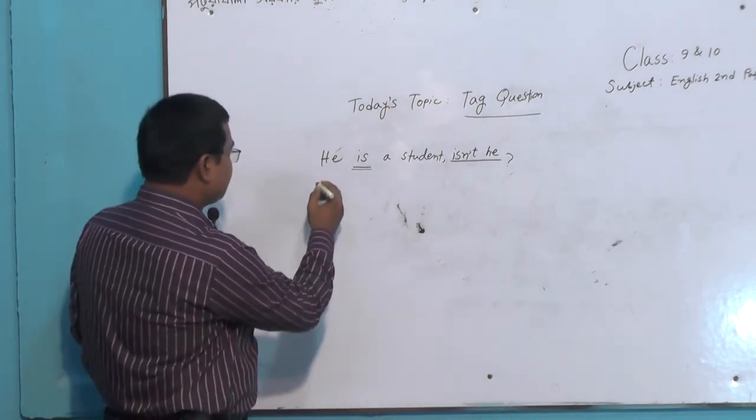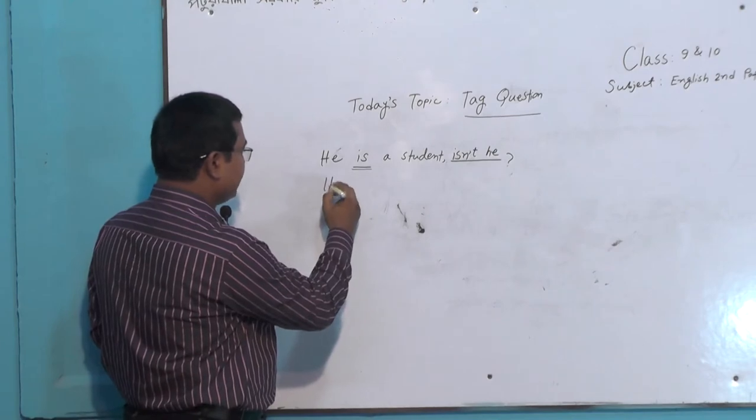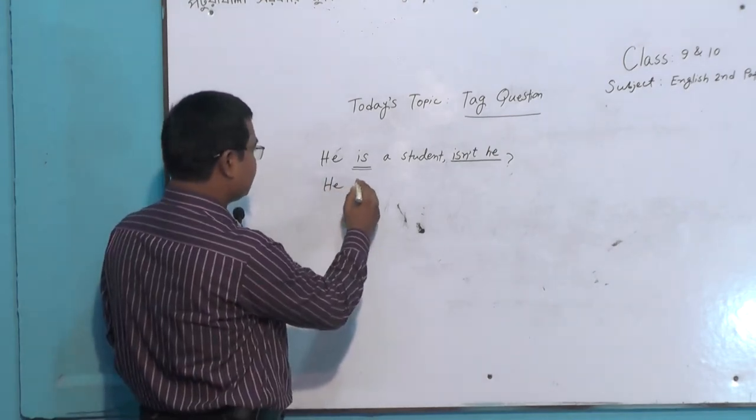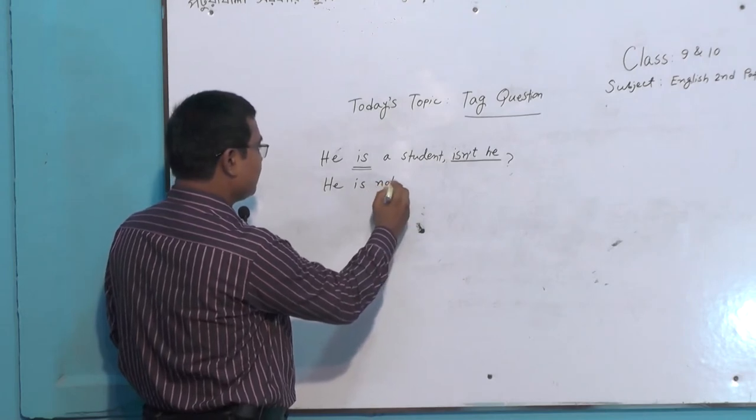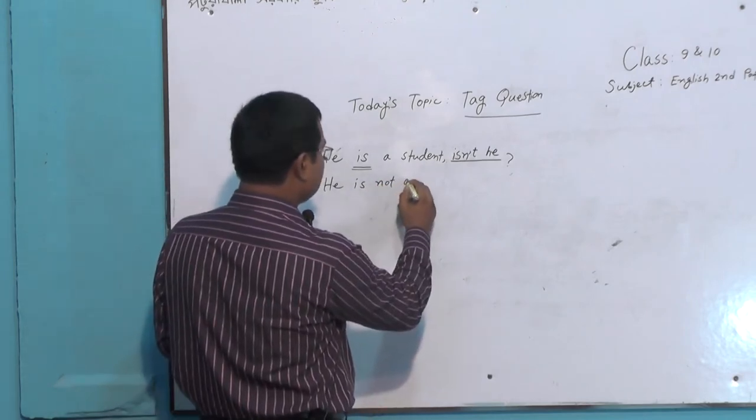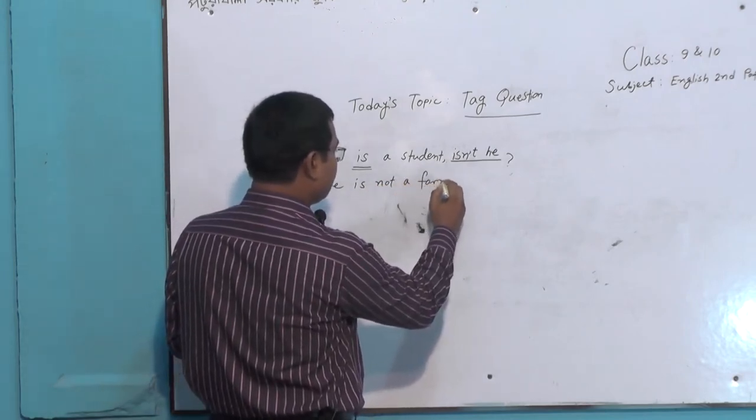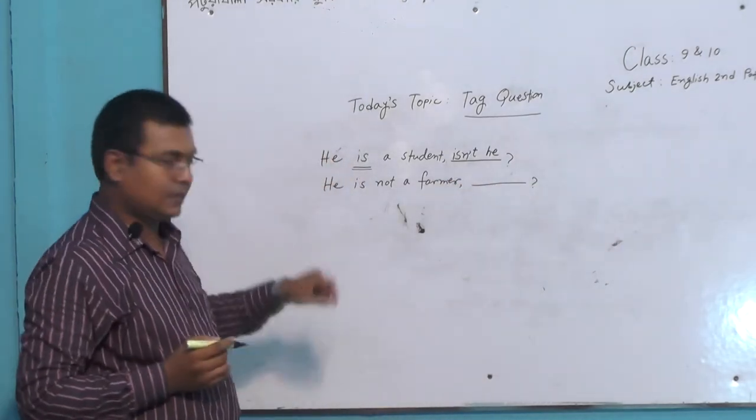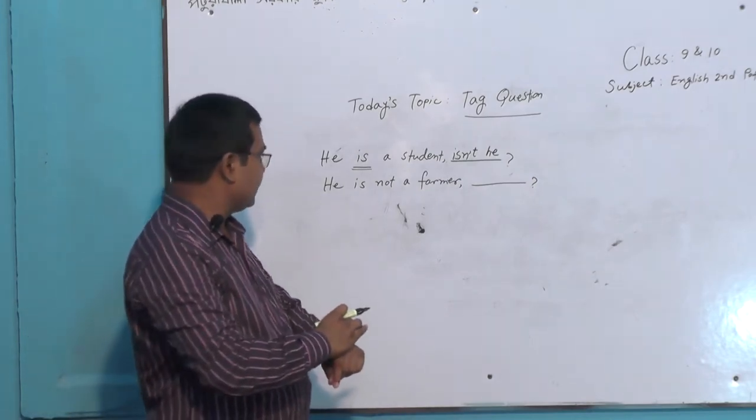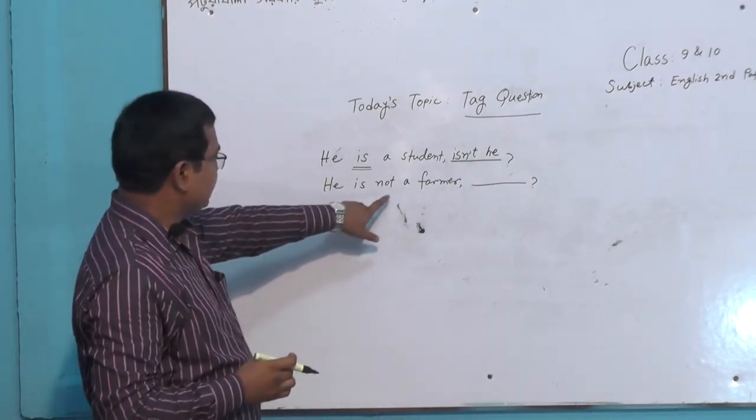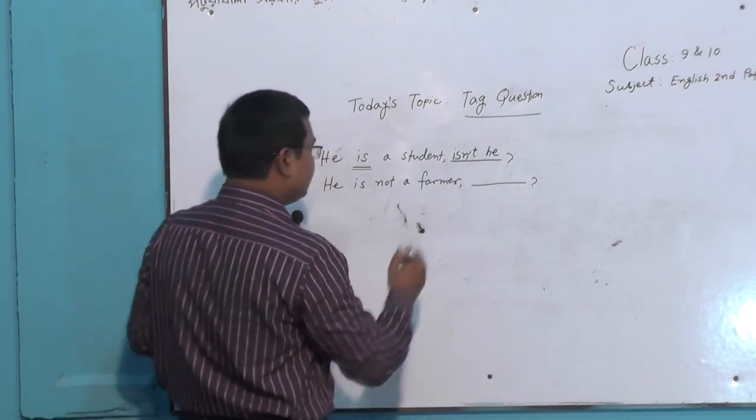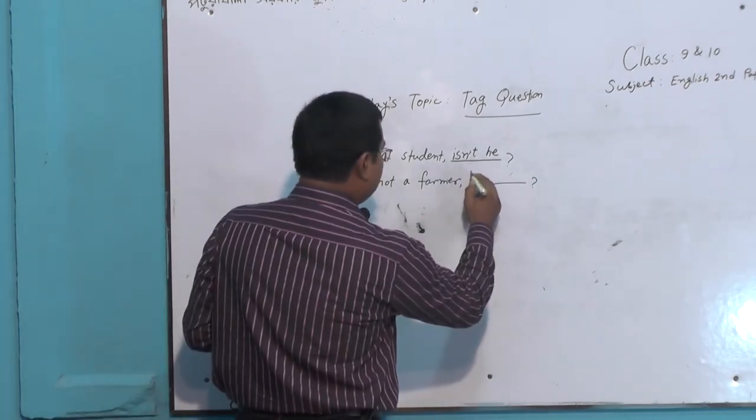Now another example, in the same way but a bit different. I will write: 'He is not a farmer.' Here there is a 'not', and there is be here. We will write 'is'.